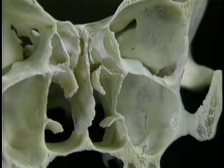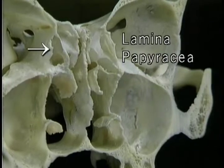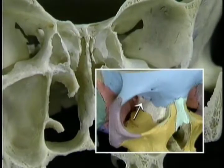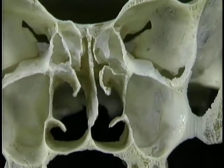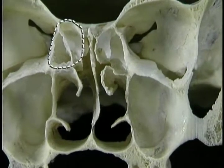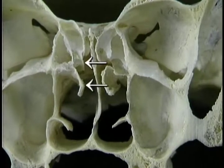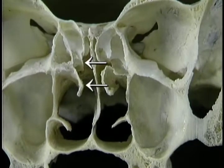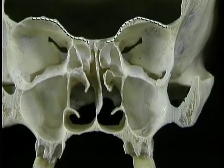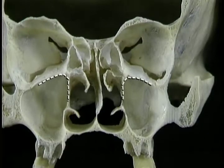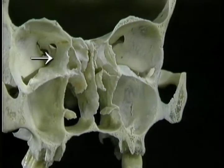The most lateral part of the ethmoid bone is the paper-thin lamina papyracea, which forms this part of the medial wall of the orbit. Between the lamina papyracea and the upper part of the nasal cavity are the ethmoid air cells. The superior and middle conchae are also parts of the ethmoid bone. The ethmoid bone is joined to the frontal bone above, the maxilla below, and the central part of the sphenoid bone behind.